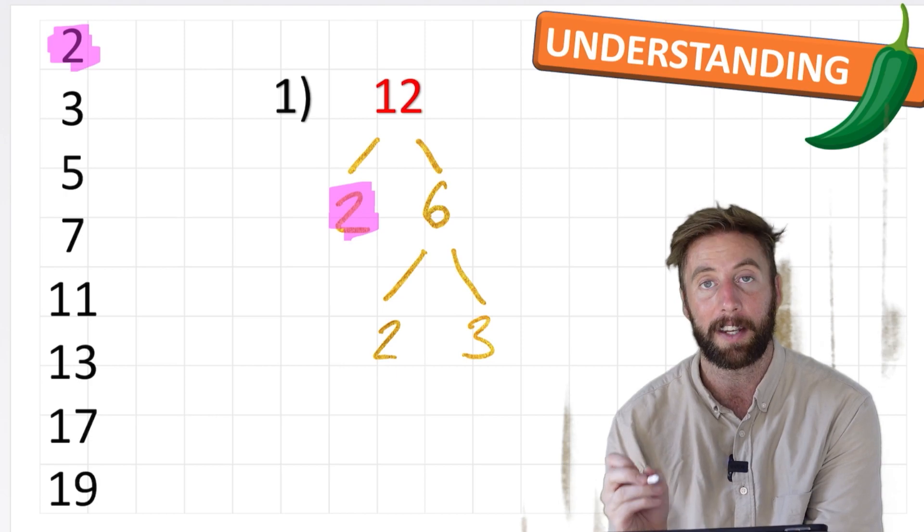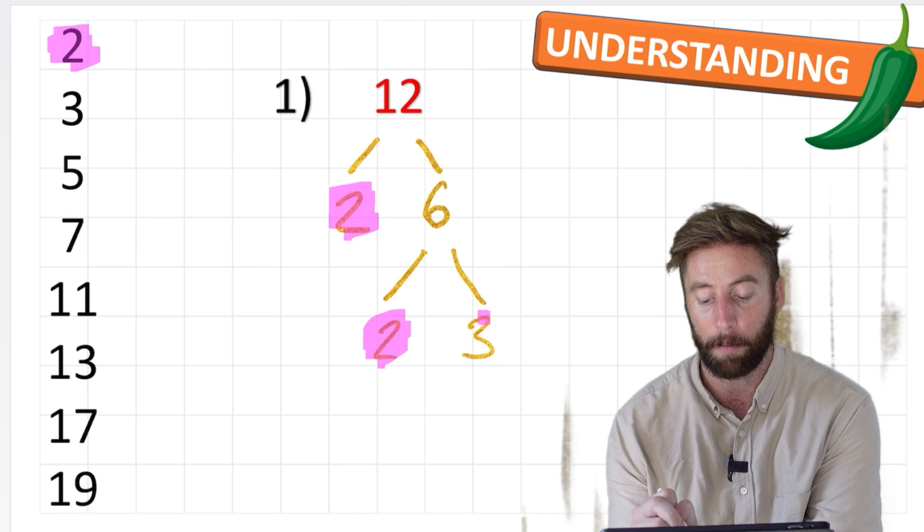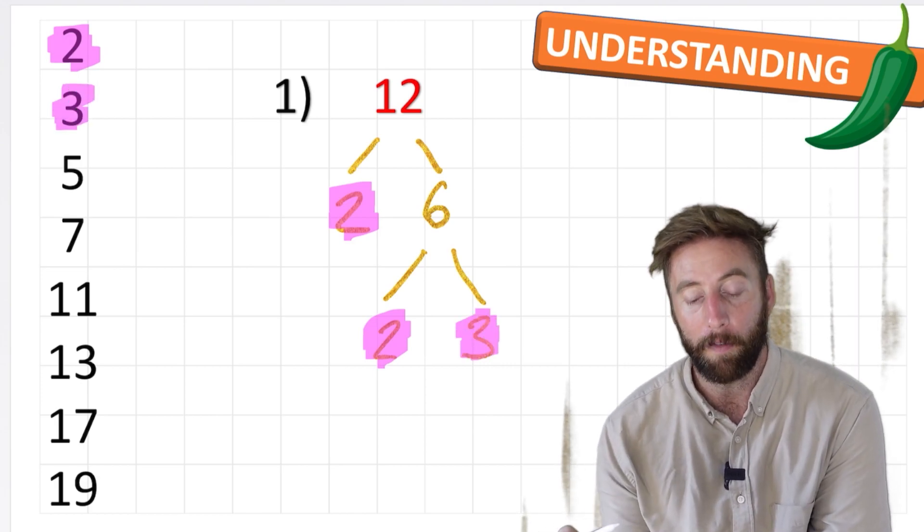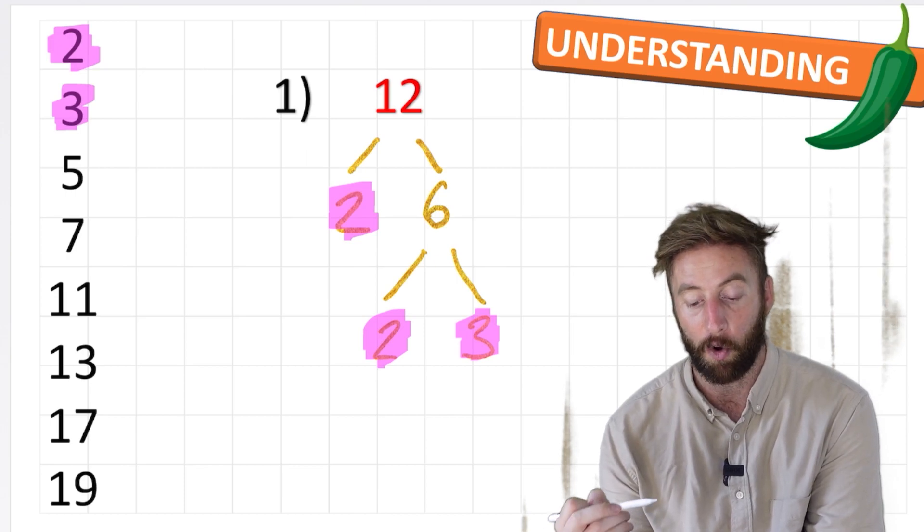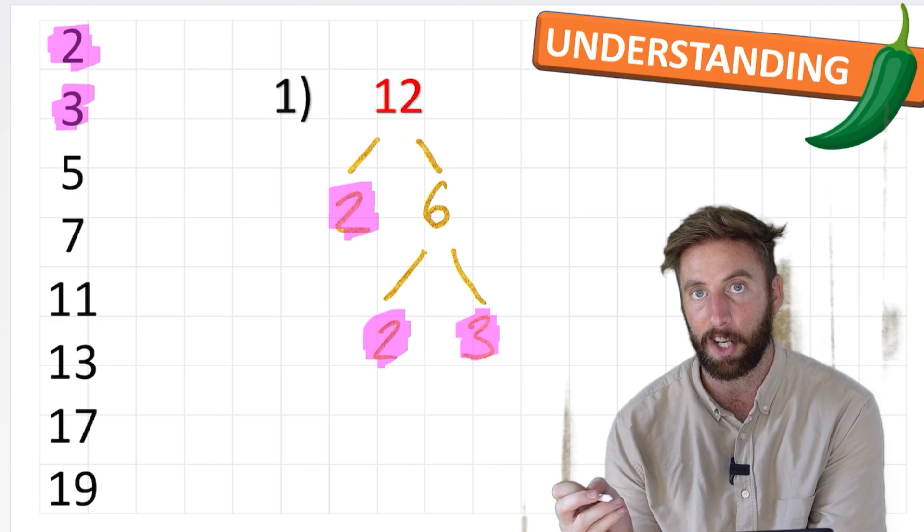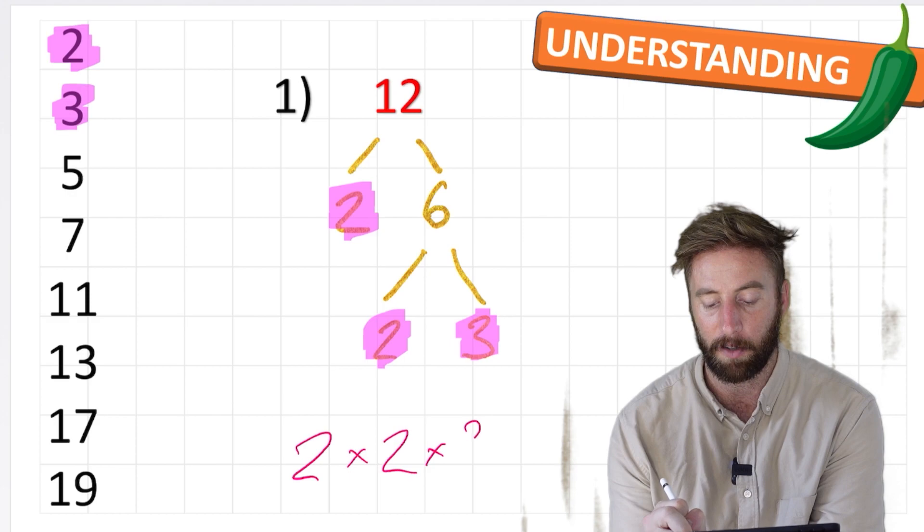Now, what do we notice? We've got ourselves down to a 2 again. 2 is a prime number and guess what? Number 3 is also a prime number. So what we've done here is we've got our factor tree all the way down to prime numbers. So our prime factorization for the number 12 would be 2 times 2 times 3.